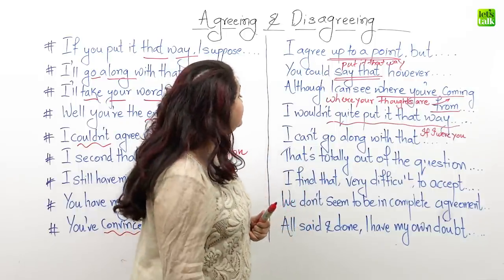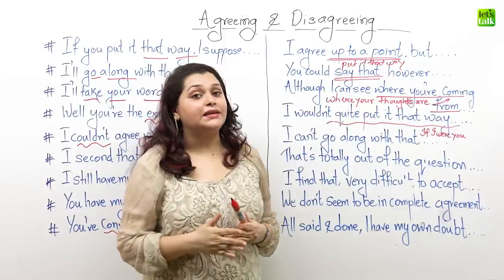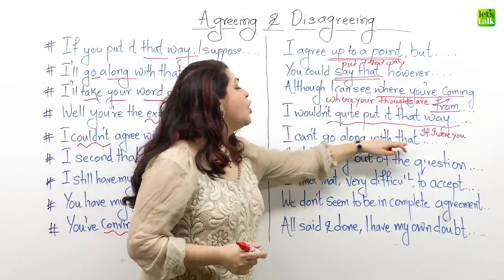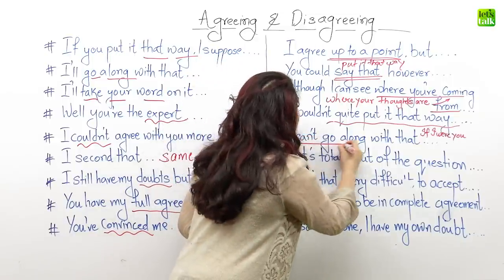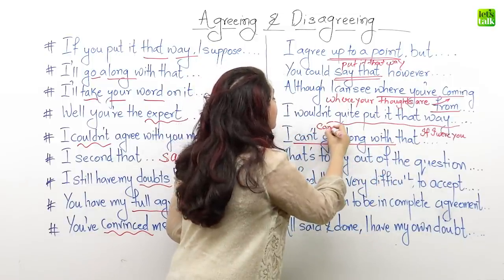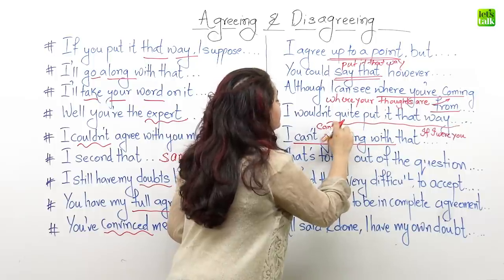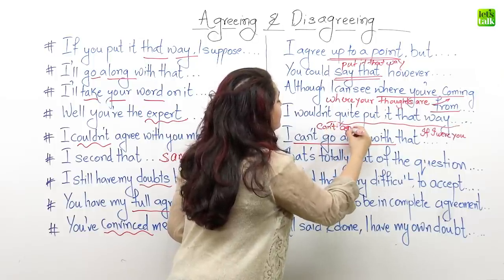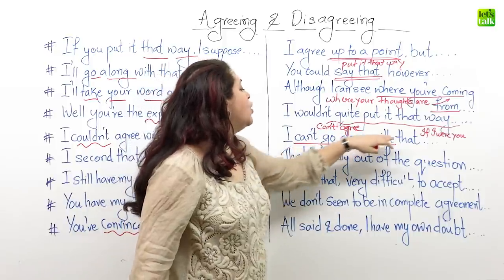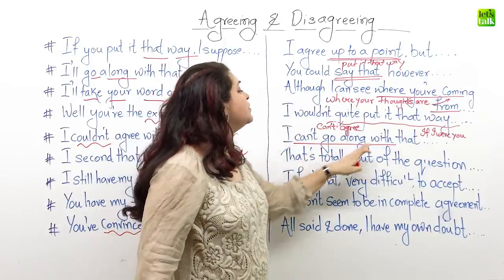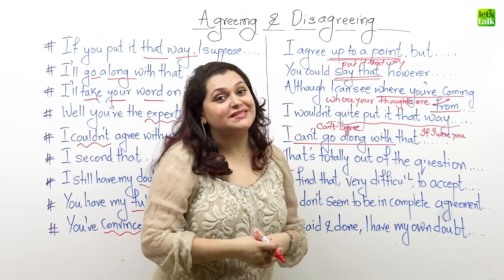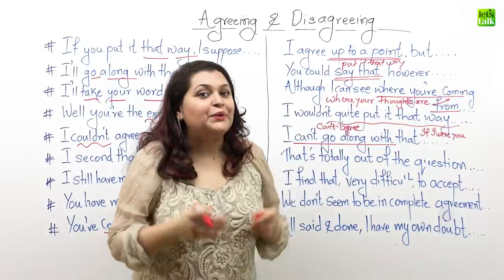Now let's see the next one. This one is fairly cut and dry. Here Sally says 'I can't go along with that.' When you say 'can't go along with something,' it means you can't agree with it. So Sally is saying 'I can't go along with that,' meaning I can't seem to agree with that and hence I disagree with you. Obviously, if you can't agree with something, you clearly disagree.